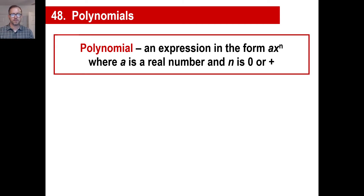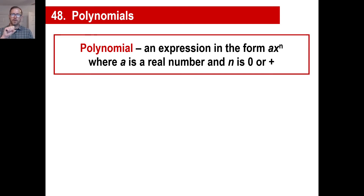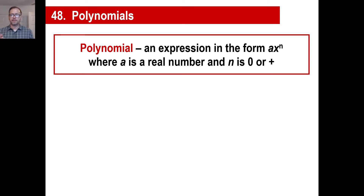The official definition is an expression in the form a times x to the n power, where a is a real number and n is either zero or a positive number. So to break this all down, you've got a term or an expression. It can be one term, like x to the third. It could be 4. It could be negative 50. It could be 18y to the 15th power.